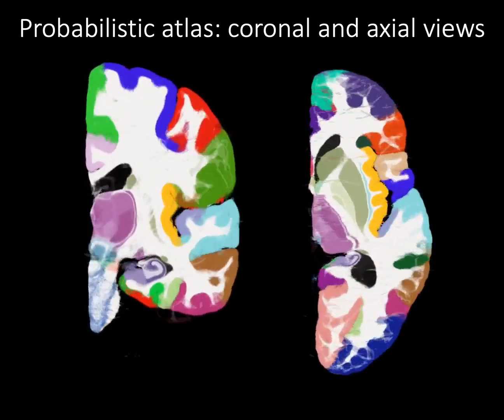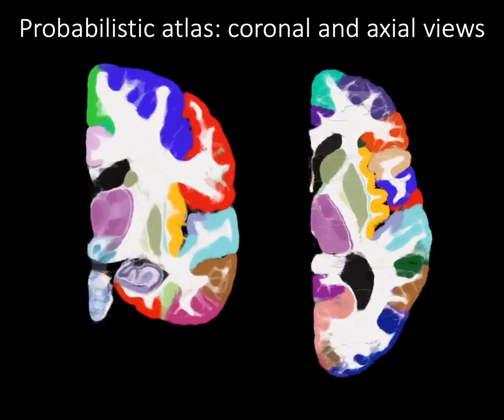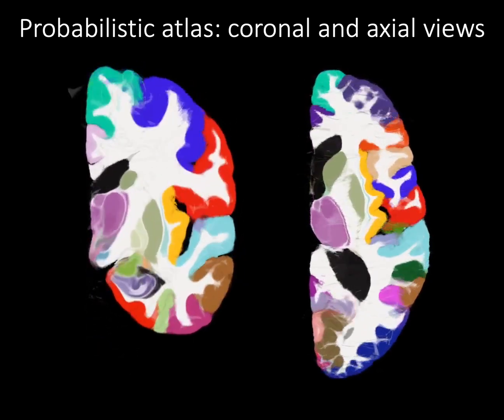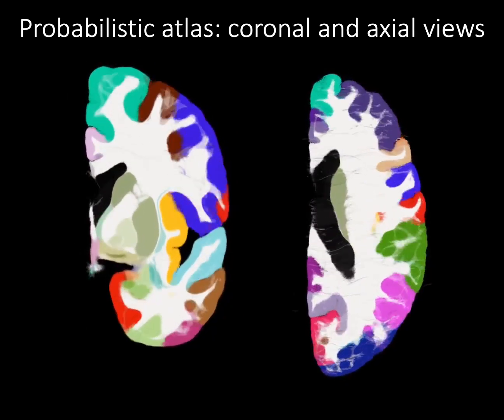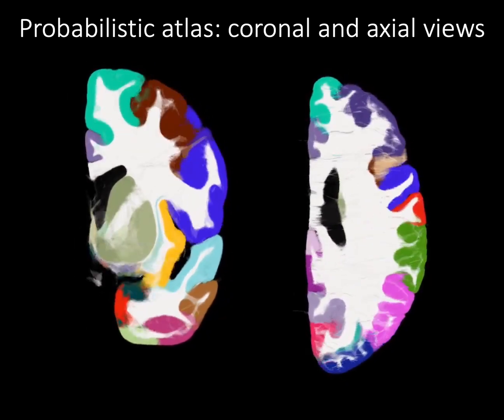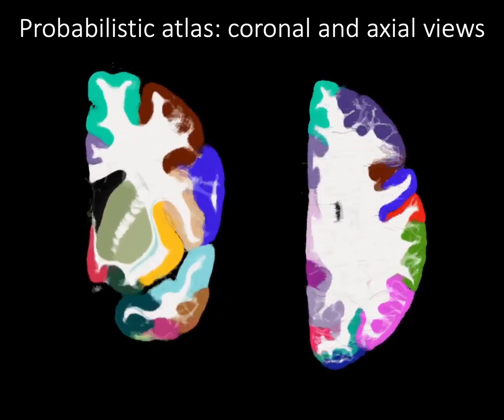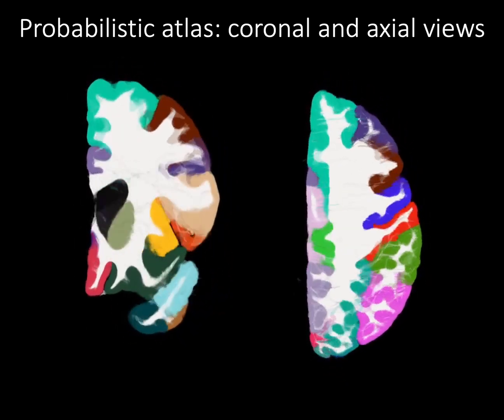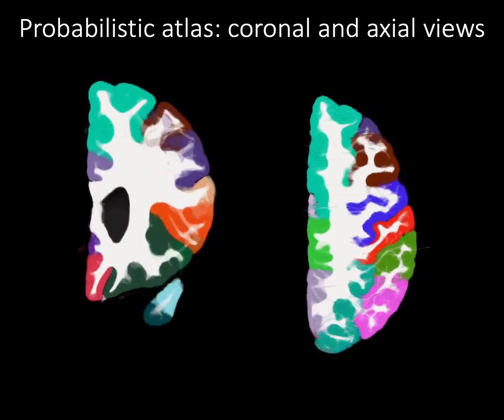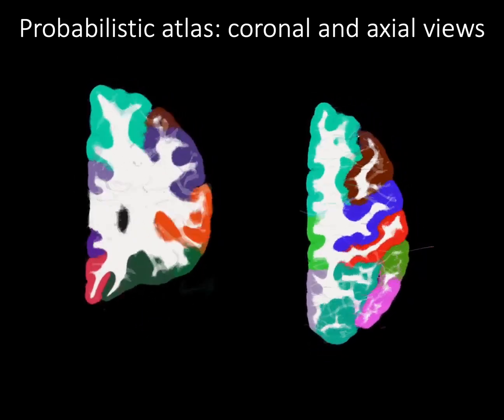The atlas includes labels for over 300 brain regions, both cortical and subcortical. The atlas is built with a resolution of 200 microns.